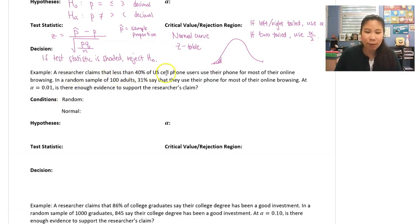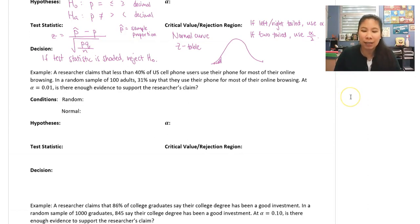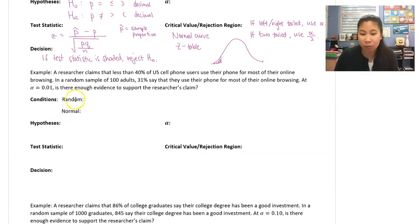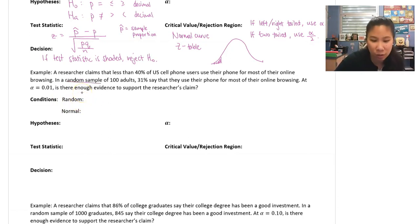A researcher claims that less than 40% of US cell phone users use their phone for most of their online browsing. In a random sample of 100 adults, 31% say that they use their phone for most of their online browsing. At alpha equals 0.01, is there enough evidence to support the researcher's claim? First we check conditions — if they don't work, we can't do the problem. They say it's a random sample of 100 adults, so the random condition is met.